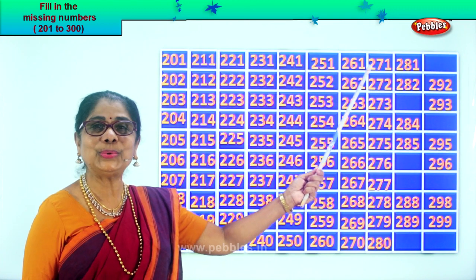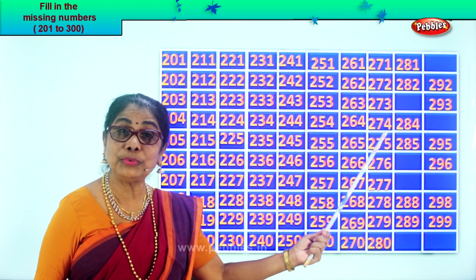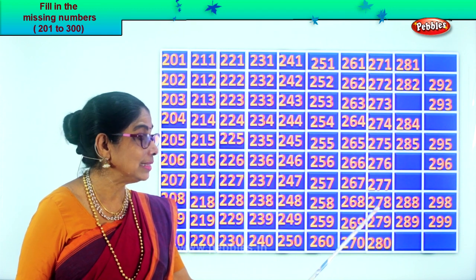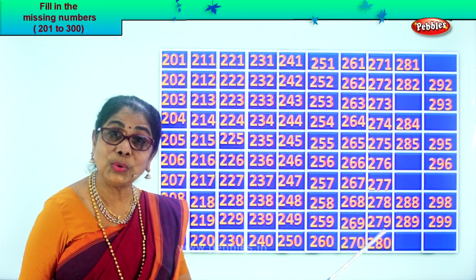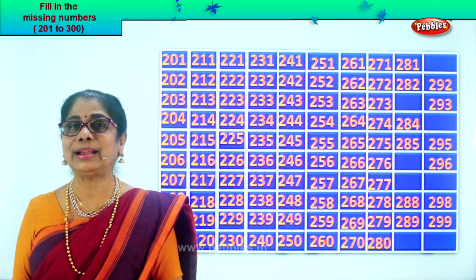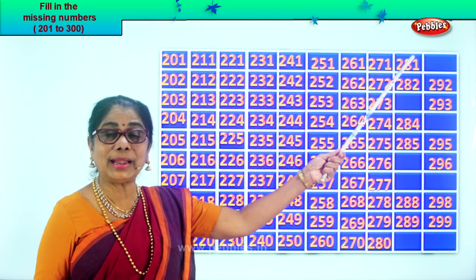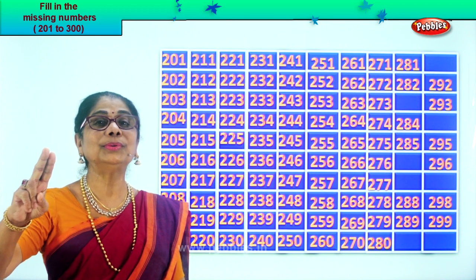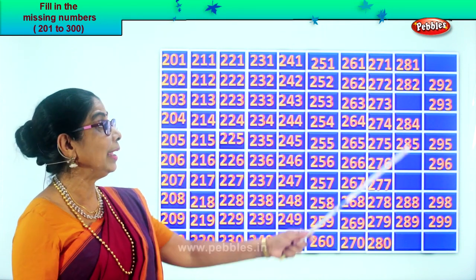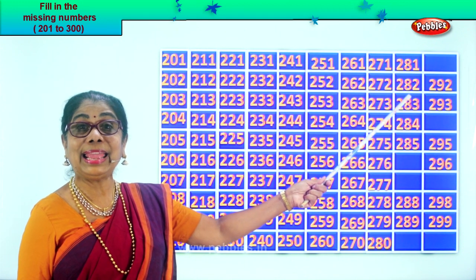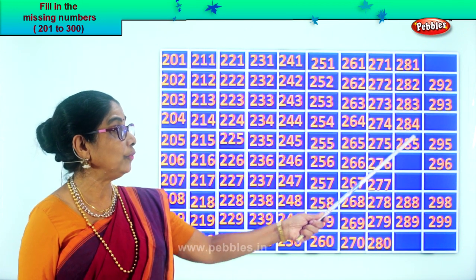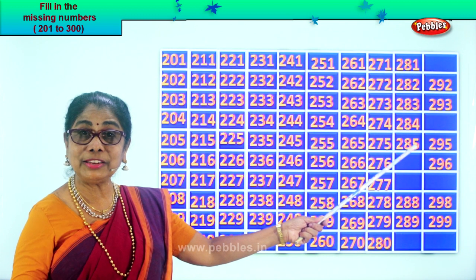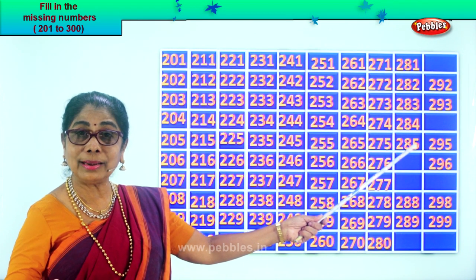271, 272, 273, 274, 275, 276, 277, 278, 279, 280. Next: 281, 282. After 2, 3. After 82, 83. 283, 284, 285. After 5, 6. After 85, 86. 286. After 6, 7. After 86, 87. 287.